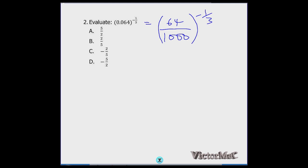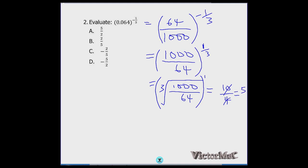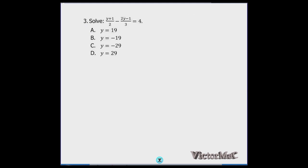The reciprocal law switches the numerator and denominator, giving us 1000 over 64 raised to the power one-third. The fractional power means we take the cube root: cube root of 1000 is 10, cube root of 64 is 4. So we get 10 over 4, which simplifies to 5 over 2. The correct option is option A.